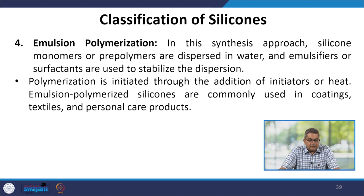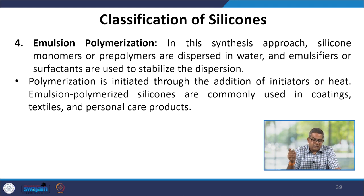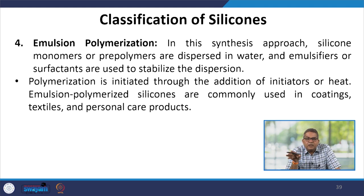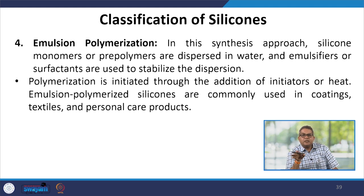Peroxide cure silicones are synthesized by incorporating a peroxide-based cross-linking agent into the silicone polymer. Upon heating, the peroxide initiator drives a free radical reaction leading to cross-linking. Peroxide cure silicones are suitable for high-temperature applications, offering good thermal stability and mechanical properties, and find use in automotive, aerospace and electrical insulation applications. Emulsion polymerization is another synthesis approach where silicone monomers or pre-polymers are dispersed in water and emulsifiers or surfactants stabilize the dispersion. Polymerization is initiated through addition of initiator or heat, and emulsion polymerized silicones are commonly used in coatings, textiles and personal care products.